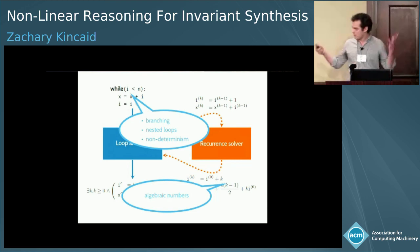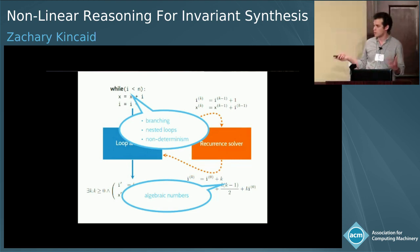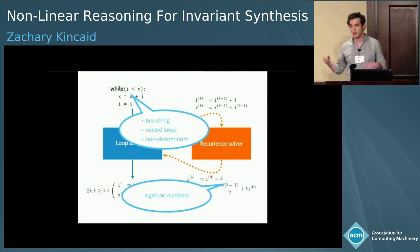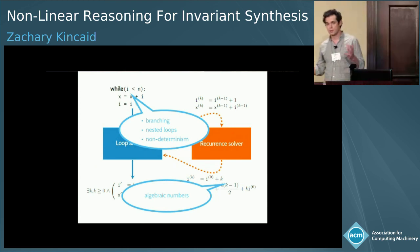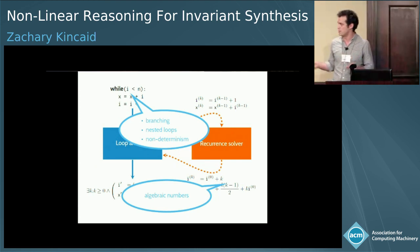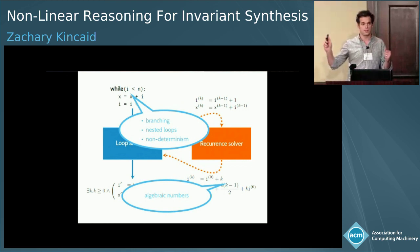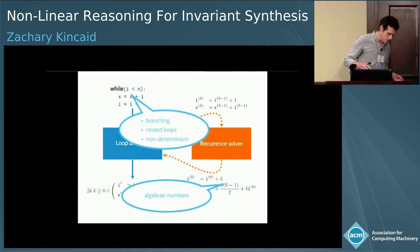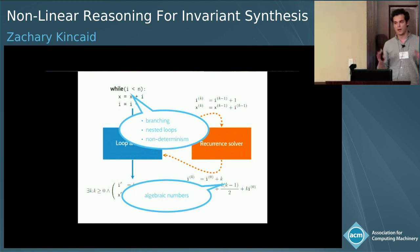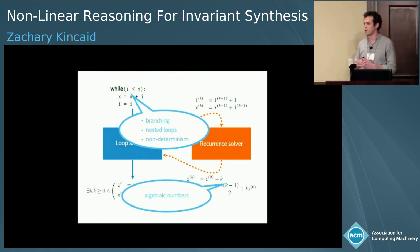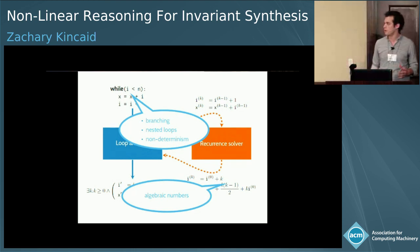There has been other work on using recurrence solvers to generate invariants, but one distinction between this work and previous work is that we really focus on these interface issues. Rather than trying to compute very precise information about a particular class of loops, we're really trying to compute approximate information about arbitrary loops.